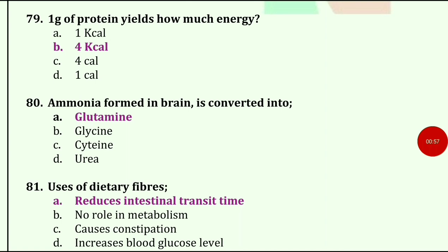1 gram of protein yields how many calories? Answer is 4 kilocalories.